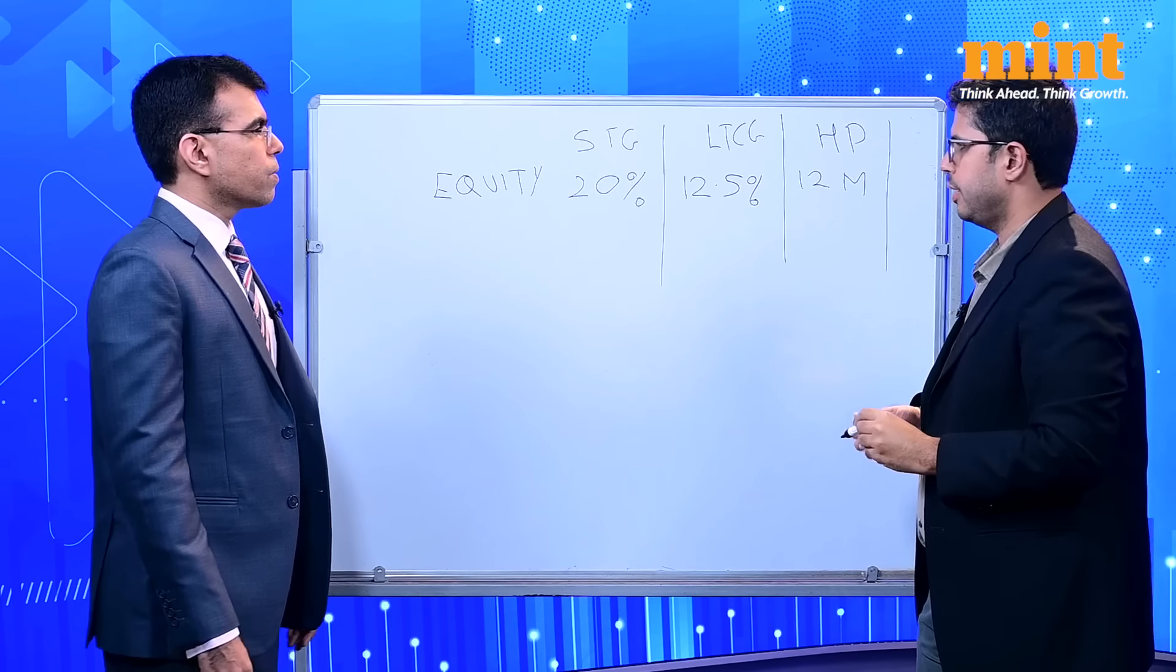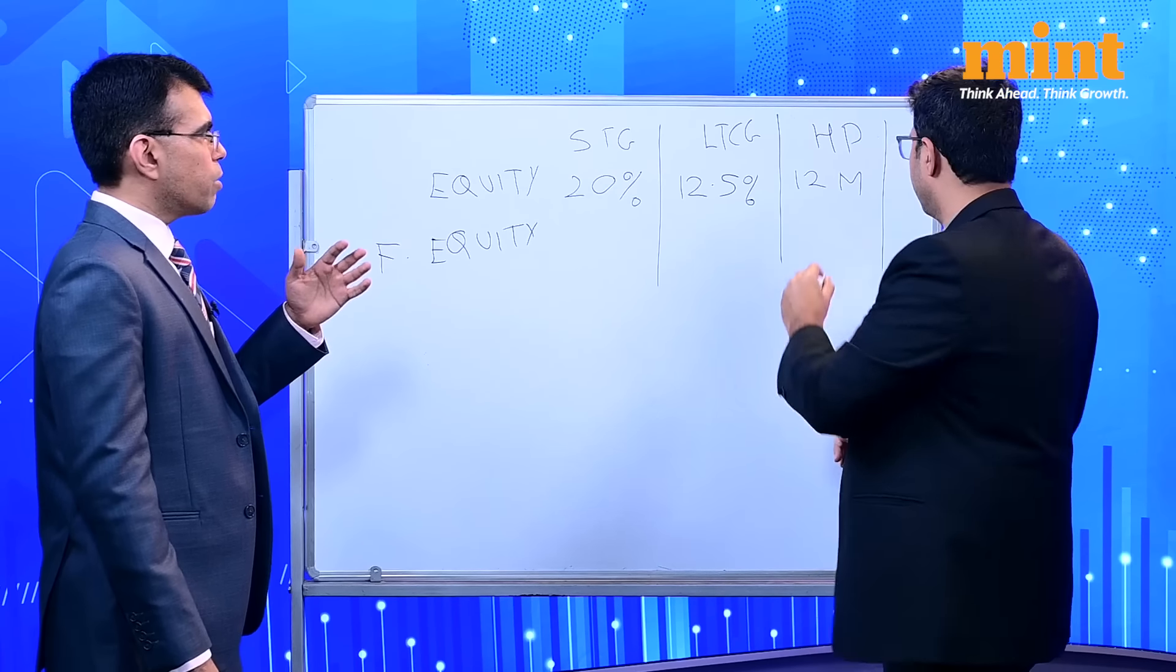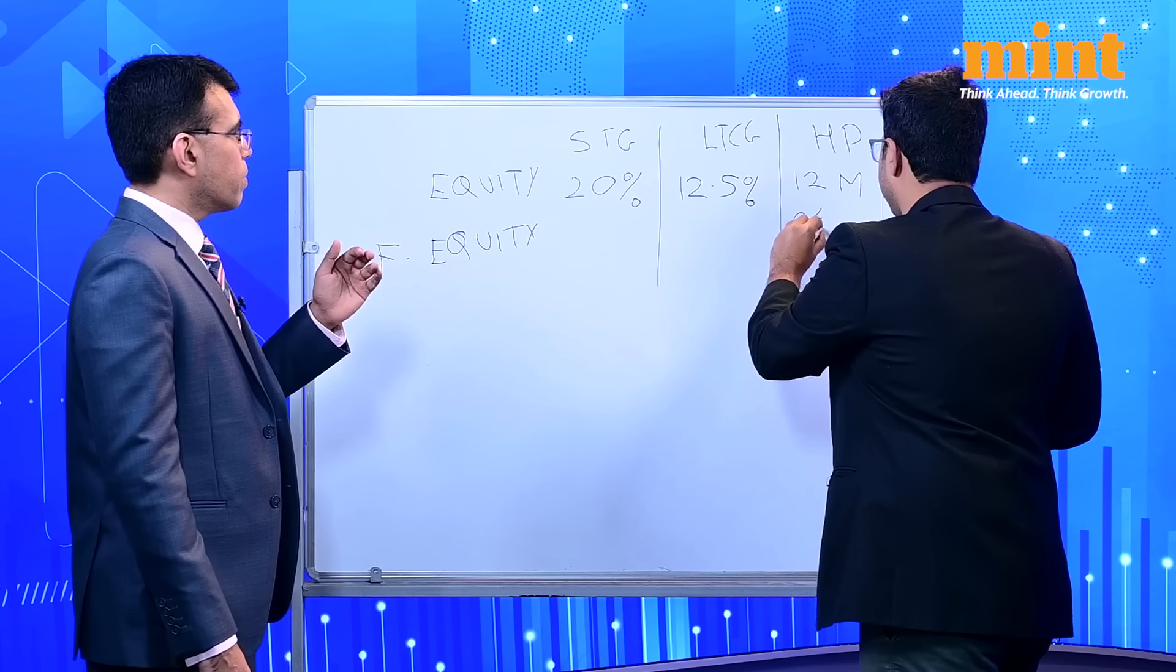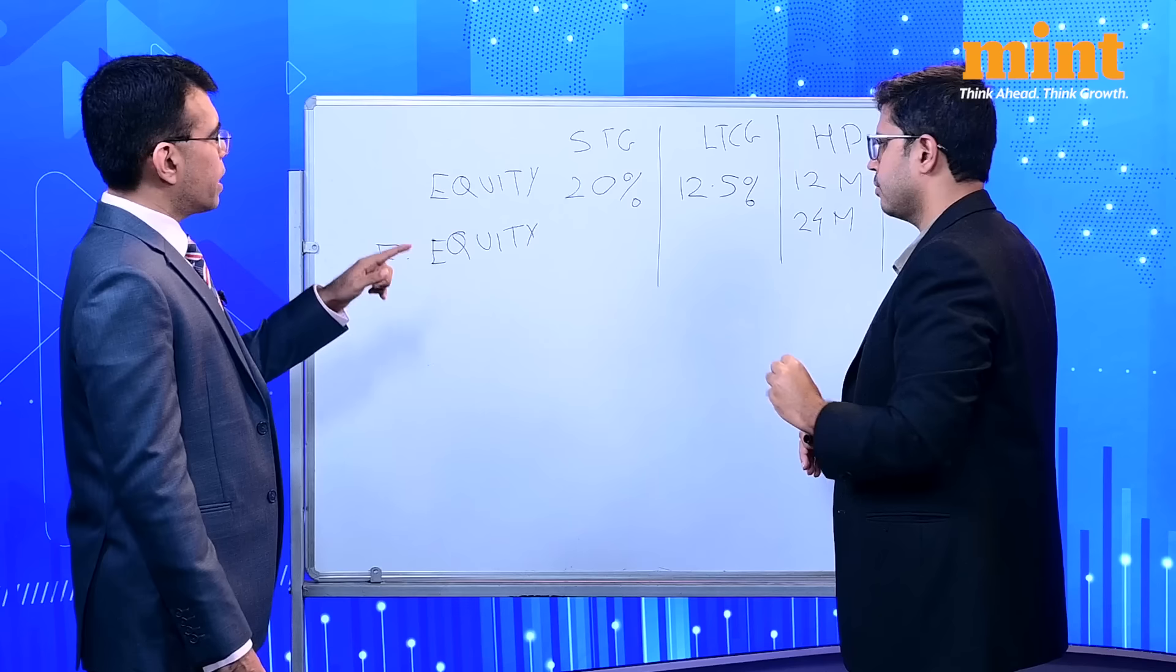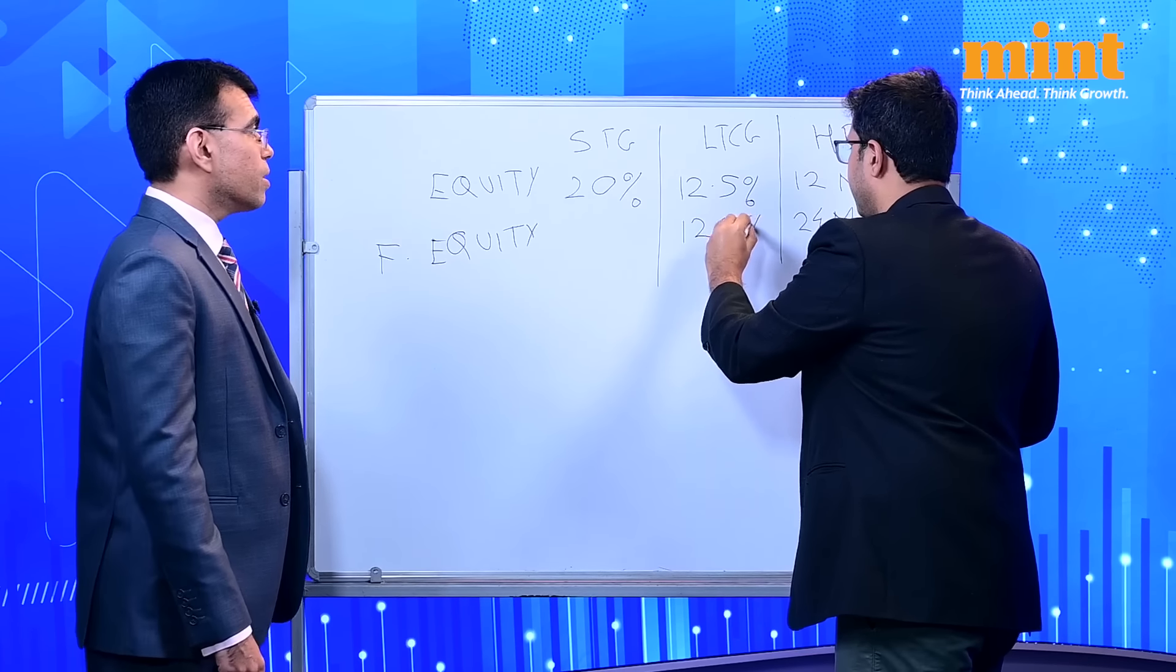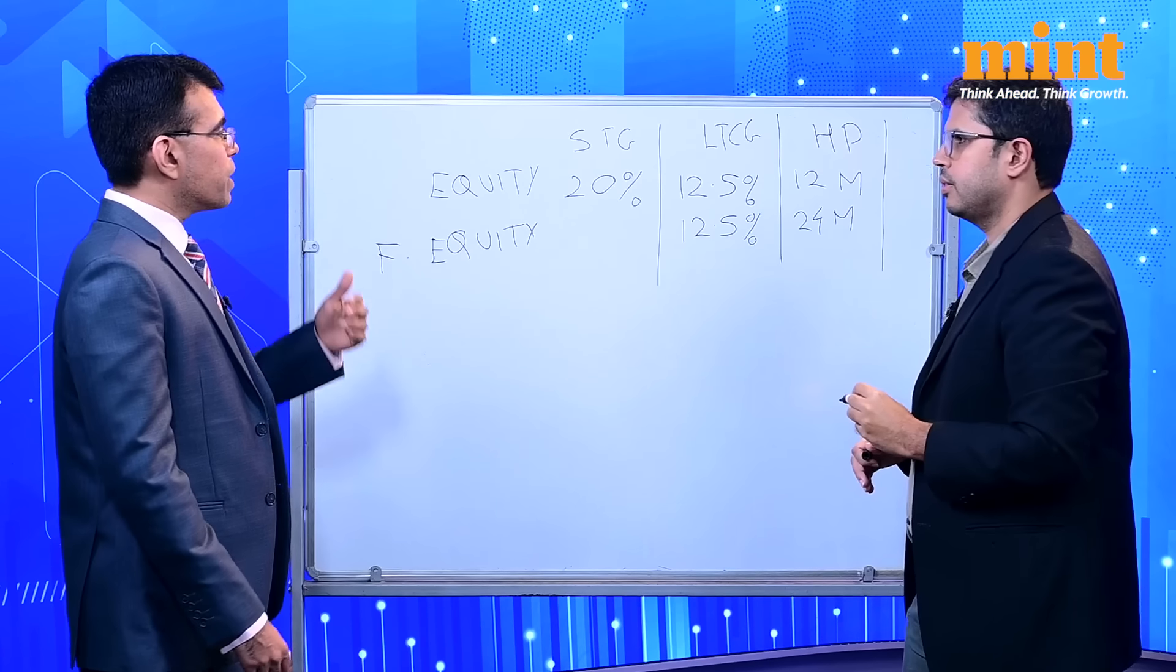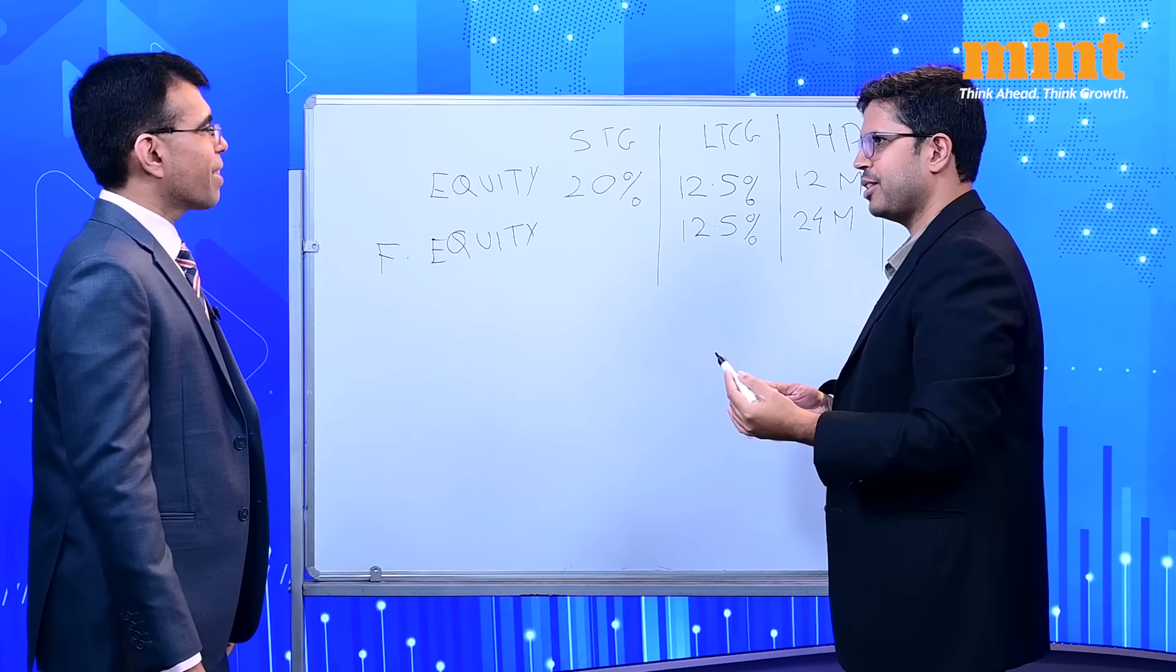If you had to buy foreign stocks, what changes have happened there? So for foreign stocks the period of holding is 24 months instead of 12 months. That stays the same. The LTCG earlier was 20%, now again it is 12.5%. Although it was 20% with indexation, now it is without indexation. So government is doing away with the concept of indexation altogether. That is the big shocker of this budget.